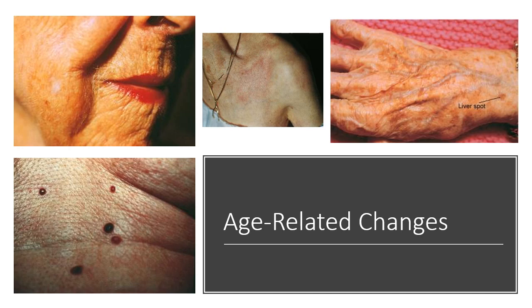Age-related changes that are normal include decreased skin integrity or strength, increased risk for impaired skin integrity, and delayed wound healing. There is decreased melanocyte production, increasing risk for sunburn and skin cancers, as well as hyperplasia of melanocyte activity in sun-exposed areas producing liver spots or age spots. Decreased dermal blood flow, reduced hair follicles and sebum production result in dry skin and hair thinning, which are normal.